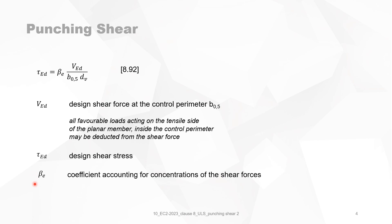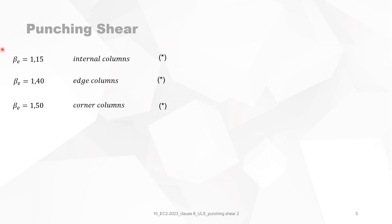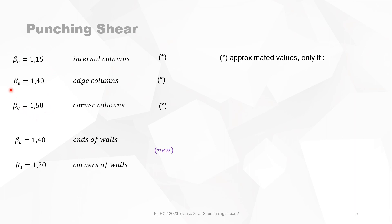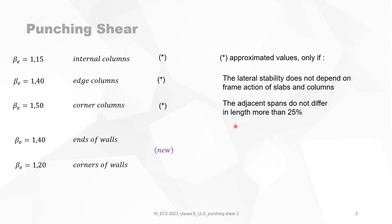The design shear stress uses beta, which is the coefficient accounting for concentrations of the shear force. The beta value is 1.15 for internal columns, 1.4 for edge columns, and 1.5 for corner columns. New in this version is that there is also a beta coefficient for the ends of walls and for the corners of walls — 1.4 and 1.2 respectively. These approximate values of 1.15 up to 1.5 can only be used when the lateral stability of the slab does not depend on the frame action of slabs and columns, and the adjacent spans do not differ in length more than 25%, and the slab is only under uniformly distributed loads.